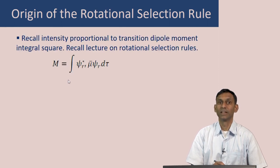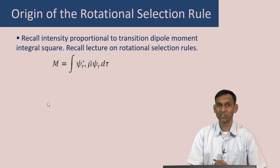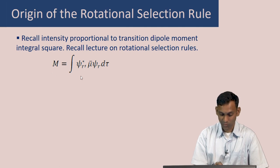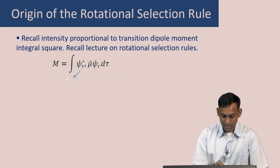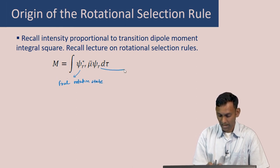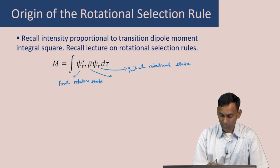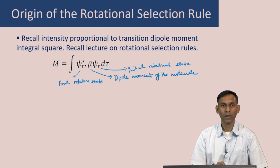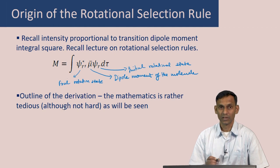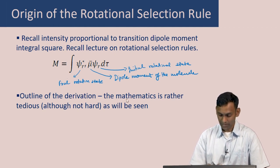You will recall that the intensity of a transition is proportional to the square of the transition dipole moment integral. You will also recall that in an earlier lecture on rotational spectroscopy, my colleague has mentioned that the intensity of a rotational transition depends on the rotational transition dipole moment integral, where this is the final rotational state, psi r is the initial rotational state, and mu is the dipole moment of the molecule.